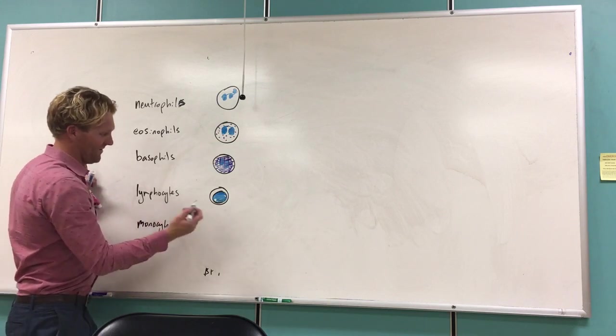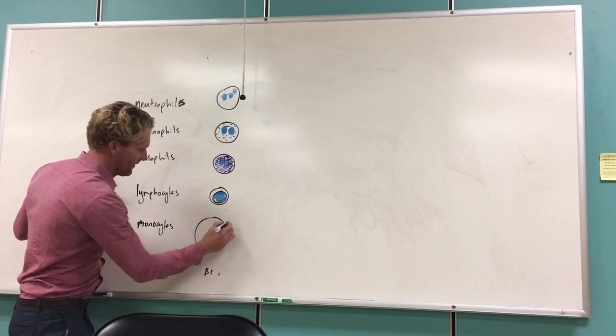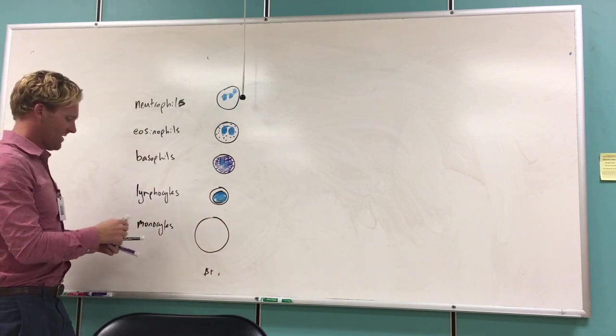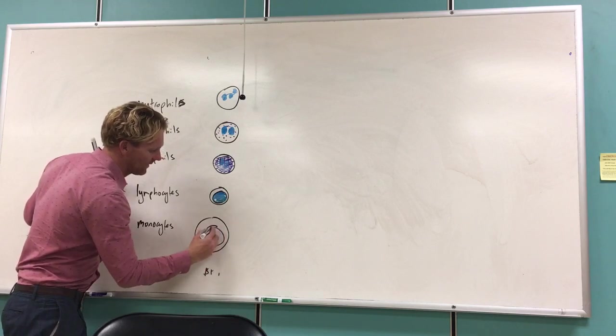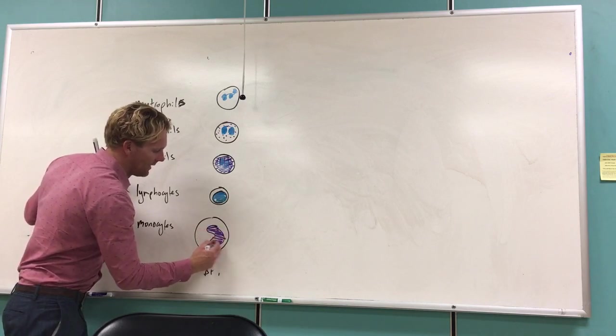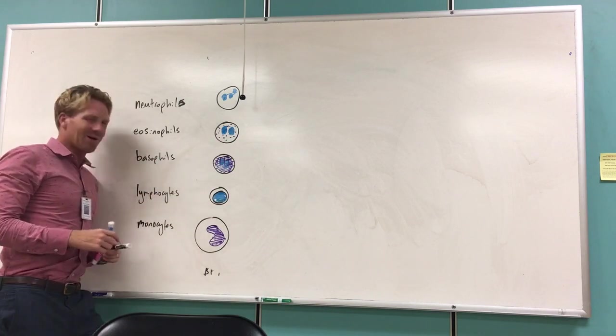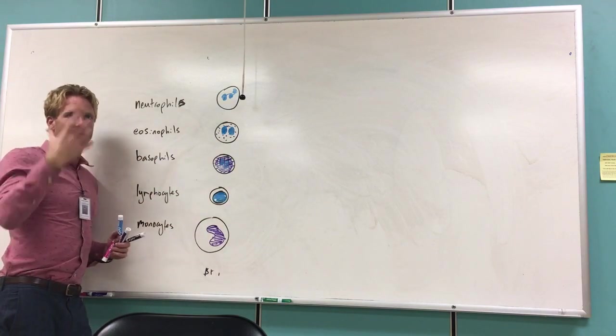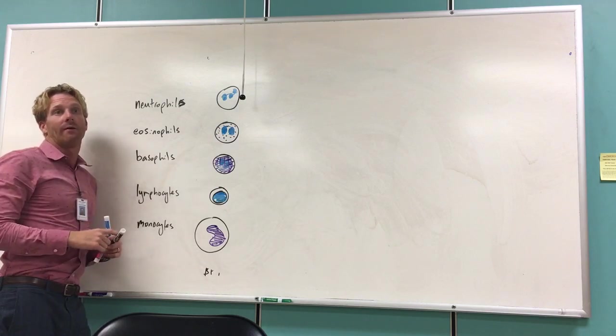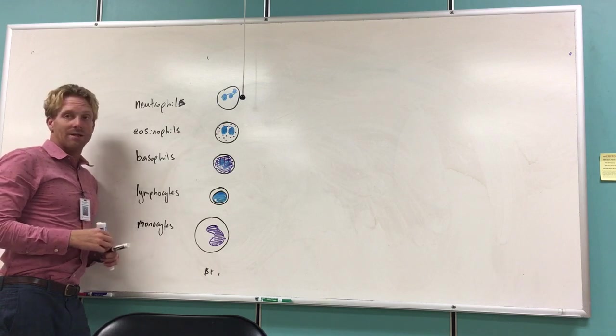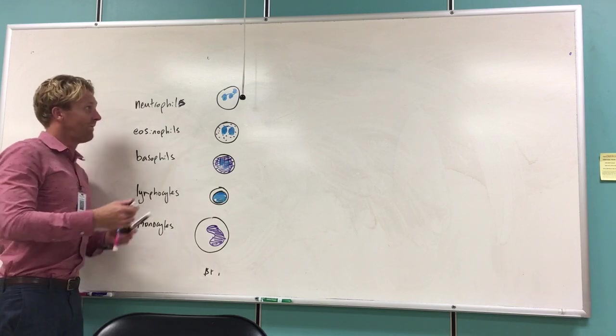Lastly we have monocytes. These are our largest white blood cell. They're about 20 micrometers in diameter or more, about that big. They have a really large, kind of kidney-shaped nucleus that looks like that. These guys, once they leave the bone marrow and enter the tissues, become macrophages, which are very powerful phagocytic cells that eat everything from bacteria to bits of old cell pieces that shouldn't be there.